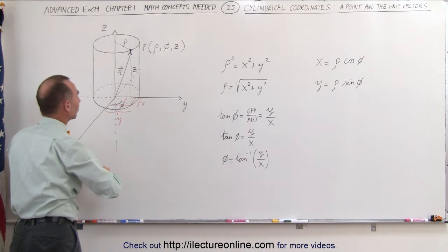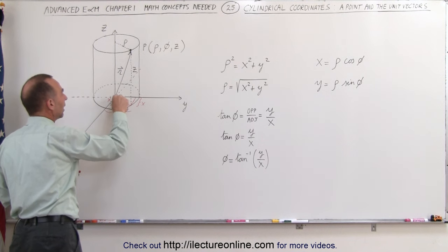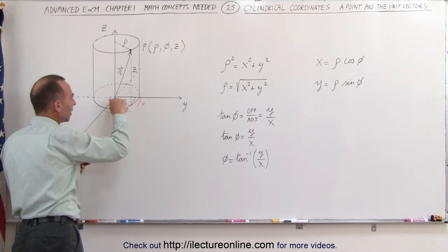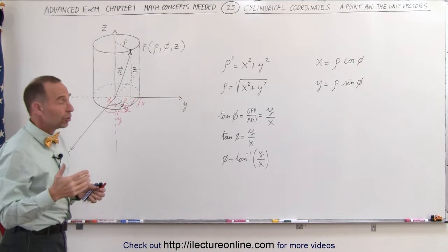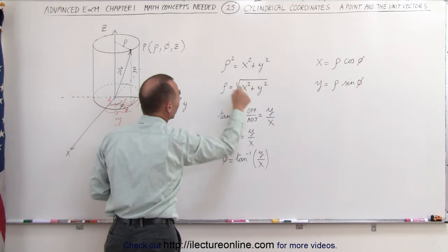And maybe I should put x over here, so this could be considered x, this could be considered y, and there's your right triangle right there, and there's the angle phi. Then you can solve for rho: ρ is equal to the square root of x squared plus y squared.